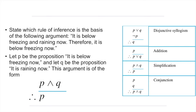The argument is 'it is below freezing and raining now,' so we write p and q, then draw the therefore line, and write p — which represents 'it is below freezing now.' The rule of inference that is the basis for this form is simplification. So the answer is: the rule of inference that is the basis for this argument is simplification.